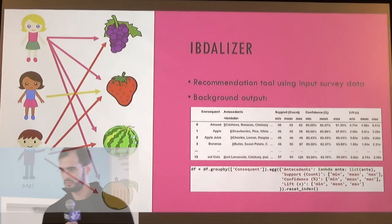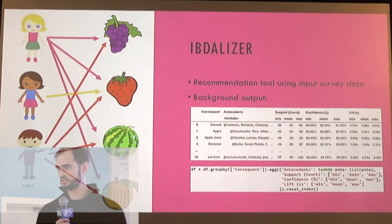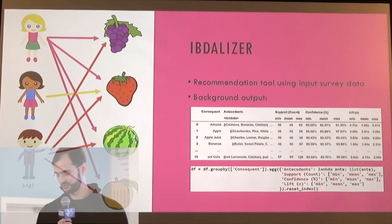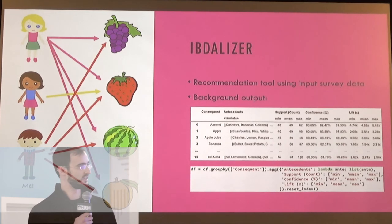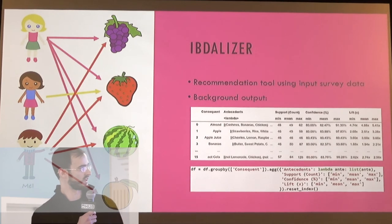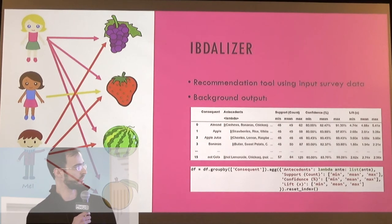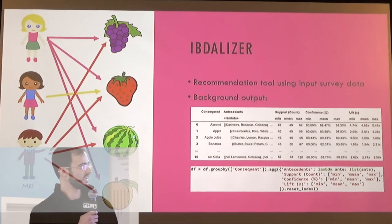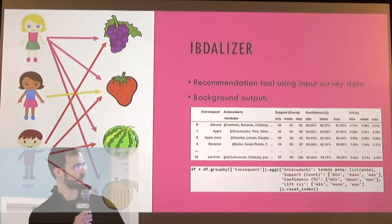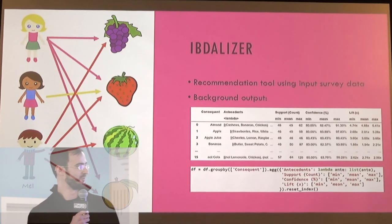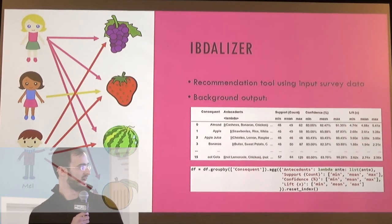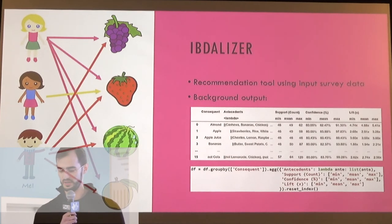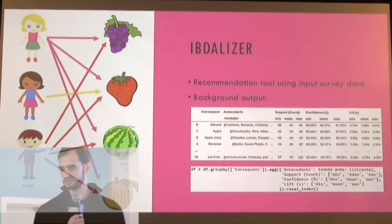With my model in hand, I built the actual recommendation tool, which I call the IBD-Elyzer. It takes in the survey data and outputs results — the consequent column shows the actual food recommendations, the antecedents are the rules that lead to those recommendations, and then there are summary statistics off to the right. It'll be prettier on the web. I also included a favorite bit of code that shows the power of pandas groupby and aggregation methods.